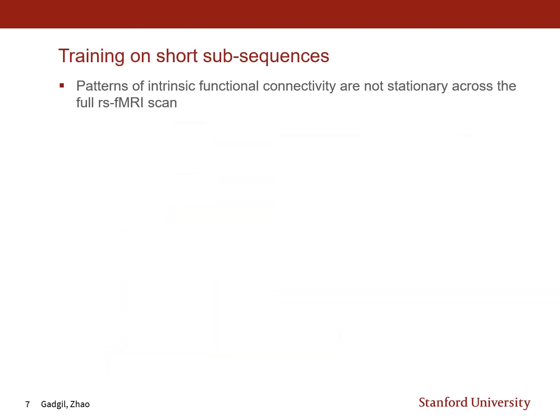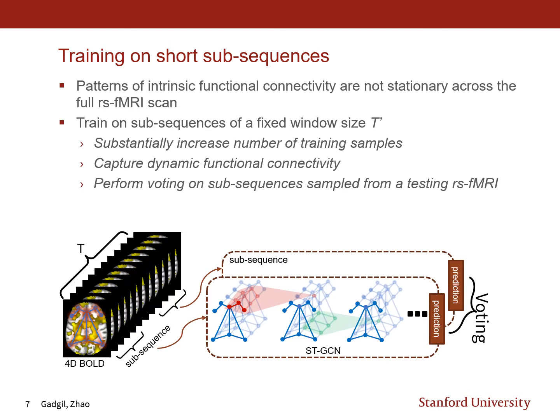We do not train the STGCN model on the full length of the MRI scan, because patterns of intrinsic functional connectivity are not stationary across the length of the BOLD signal. As a result, we train on sub-sequences of a fixed window size T prime, which is obtained through experimentation. This increases the number of training samples and captures dynamic functional connectivity. Once we have predictions from each sub-sequence, a simple voting mechanism is used to obtain the final prediction.